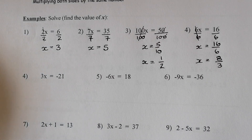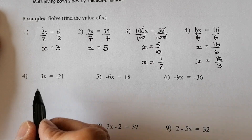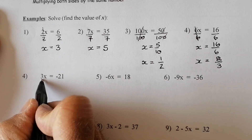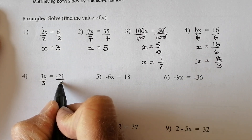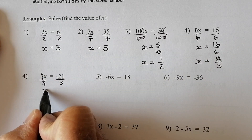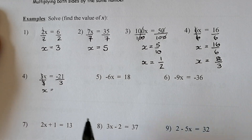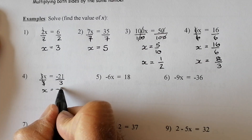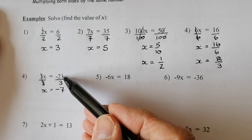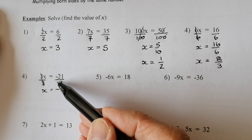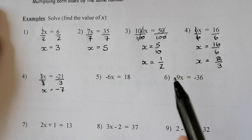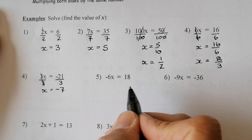Now we'll look at negative numbers. 3x equals negative 21. I don't want three of them, so I divide this side by 3 and that side by 3 as well. The 3s cancel out leaving x, and negative 21 divided by 3 gives negative 7. If I'm dividing and there's only one negative sign, the answer is negative; if there are two negatives, it's positive.